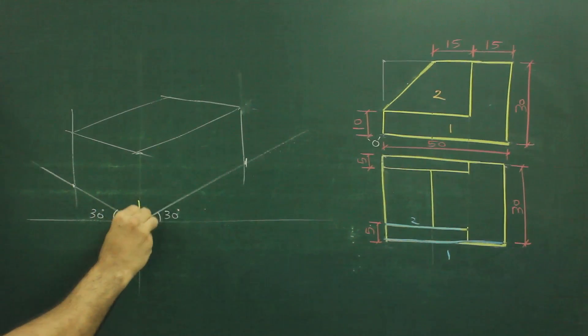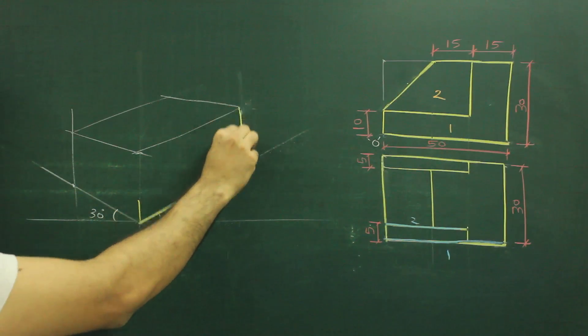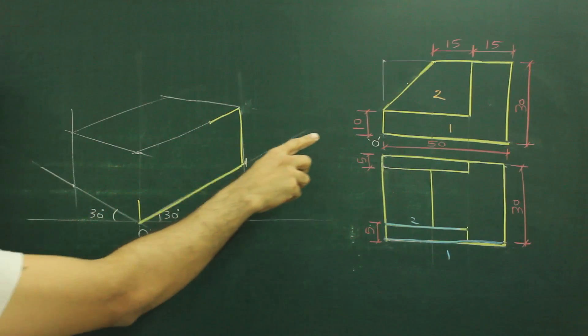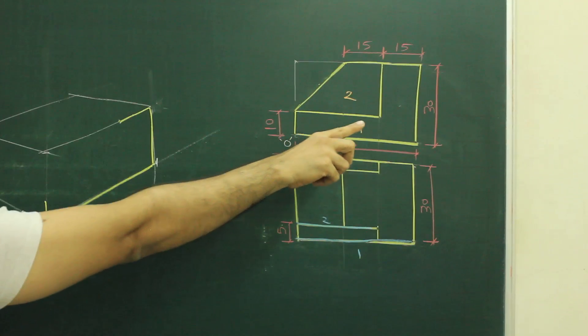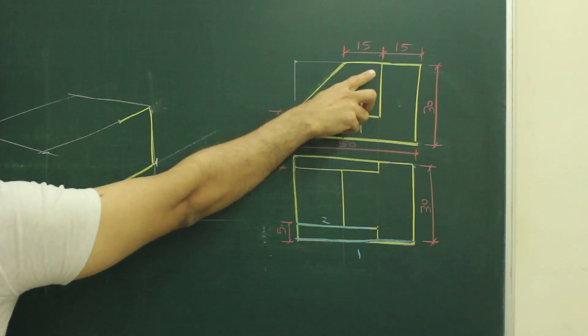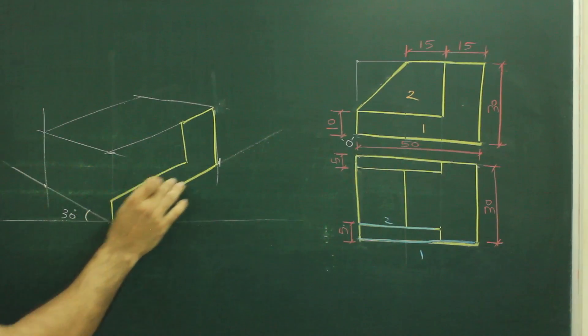So we will mark height 10. This length 50. Again height 30. Again height 50. Now if you see the main diagram, how much is this? 10. How much is the height? Total 30. So how much would be this? 20. So we will go down by 20 and we will join this. So we got this first part.